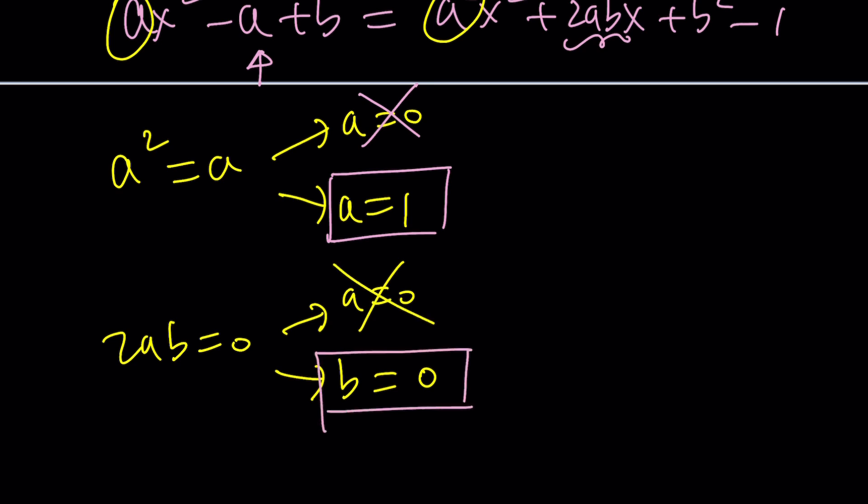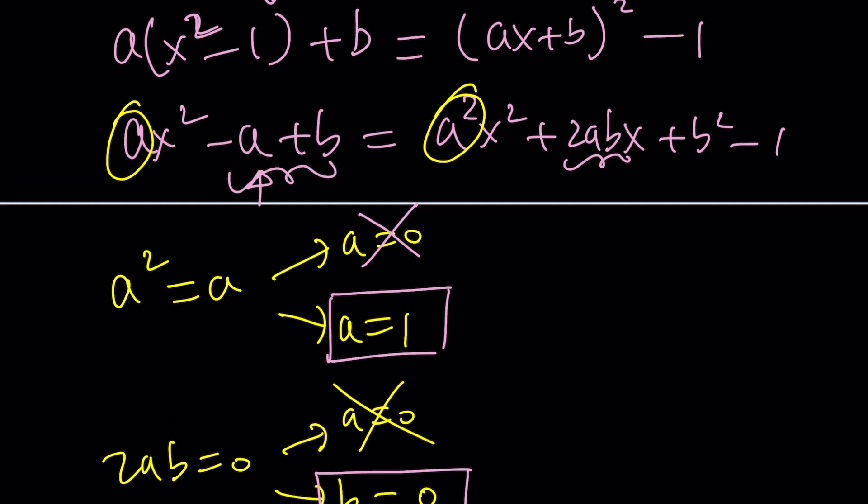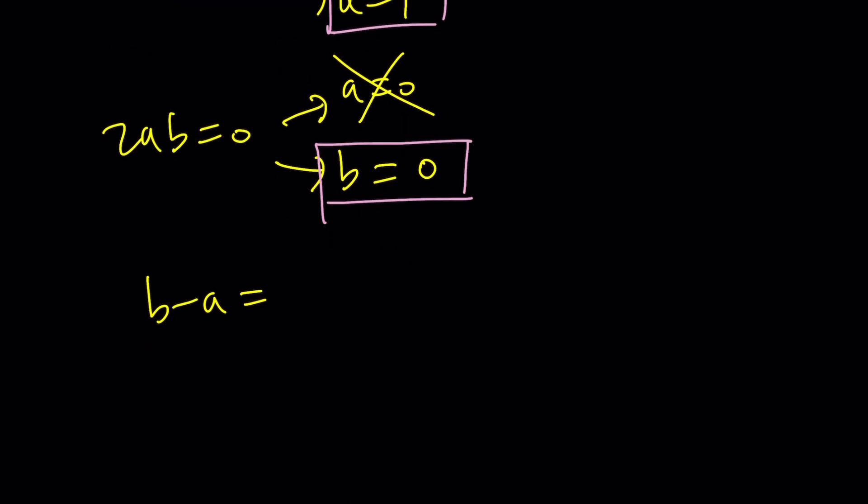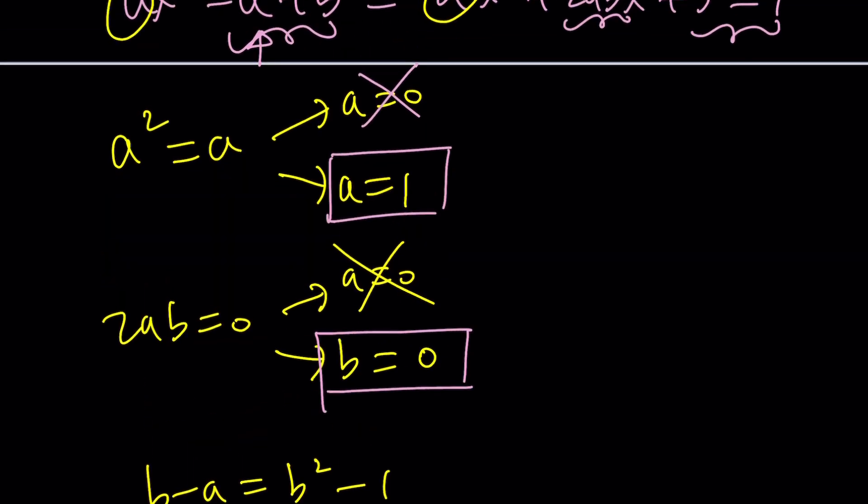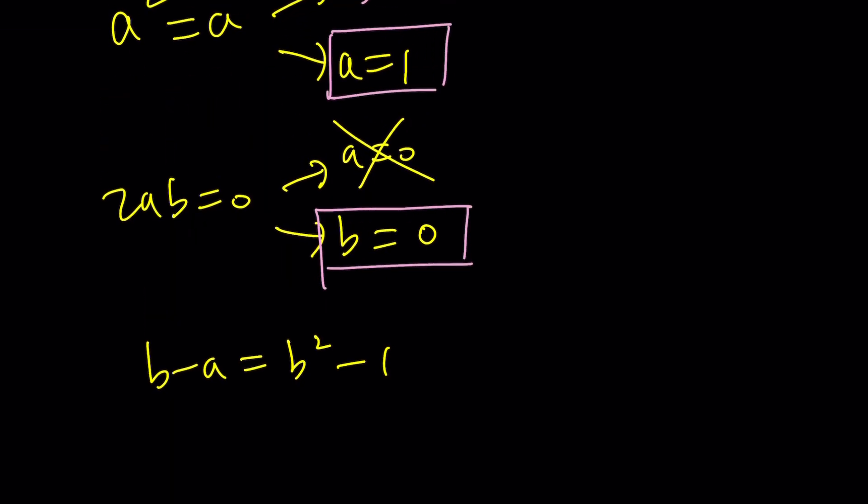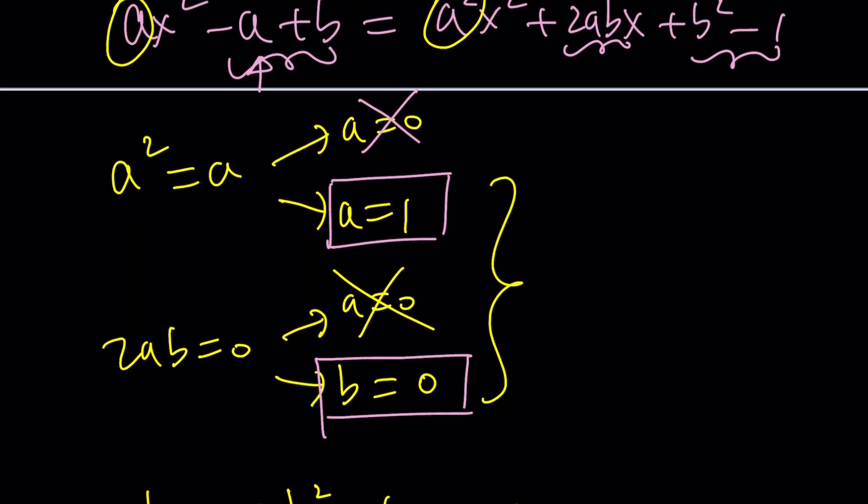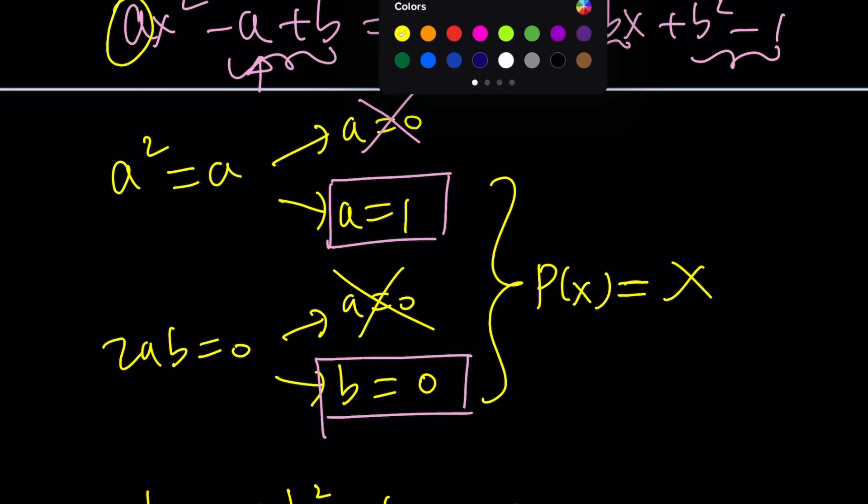And since a equals 1 and b equals 0, this kind of gives us a pair. But don't stop there because you still need to check this and that. So we also have another requirement that says b minus a equals b squared minus 1. And since we started off with a equals 1 and b equals 0, we can kind of plug this in to see if it's satisfied. So in other words, 0 minus 1 and 0 minus 1. Are they equal? Yes, the answer is correct. Therefore, a equals 1, b equals 0 will give us a valid solution. And we just assume that p of x can be written as ax plus b. So p of x equals x will be another valid solution.